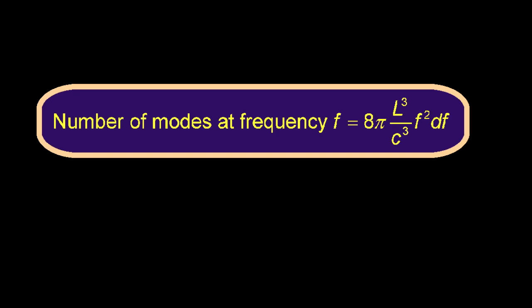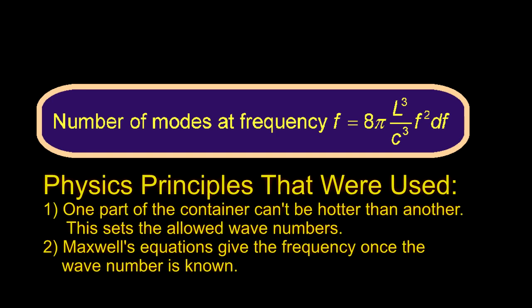Remember the physics assumptions that were used to get the formula. First, thermal physics was used to show that the cube can't be transferring energy from one side to the other. That limits us to standing waves and sets the possible wave numbers. And second, Maxwell's electromagnetic theory was used to get the frequency once the wave numbers were known.